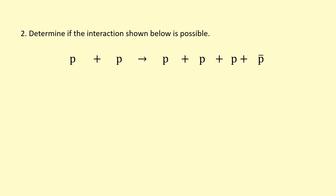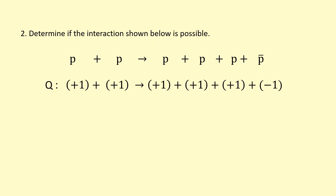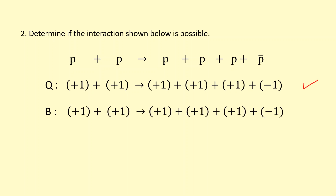What about this interaction: two protons colliding together to make three protons and an anti-proton? Starting with charge — both protons have positive charge, so it's plus two on the left. On the right we have three protons minus one for the anti-proton, giving plus two. Charge is conserved. For baryon number, all protons are plus one and the anti-proton is minus one, giving plus two on both sides.